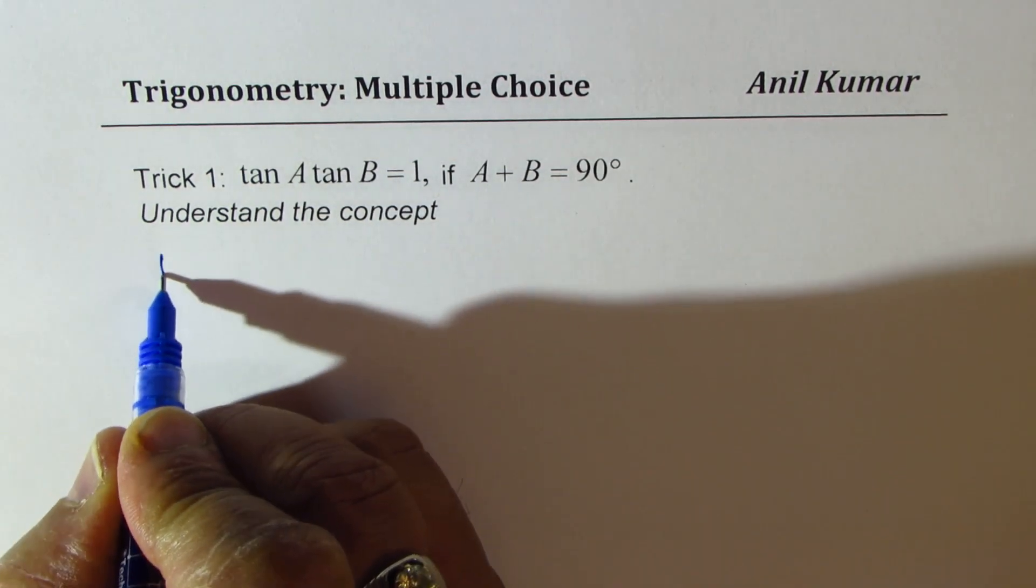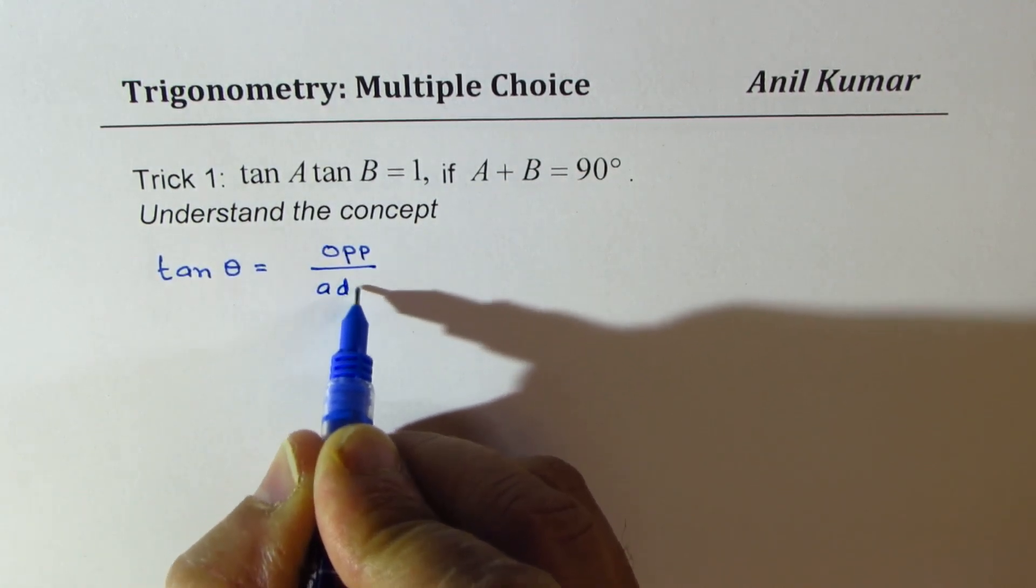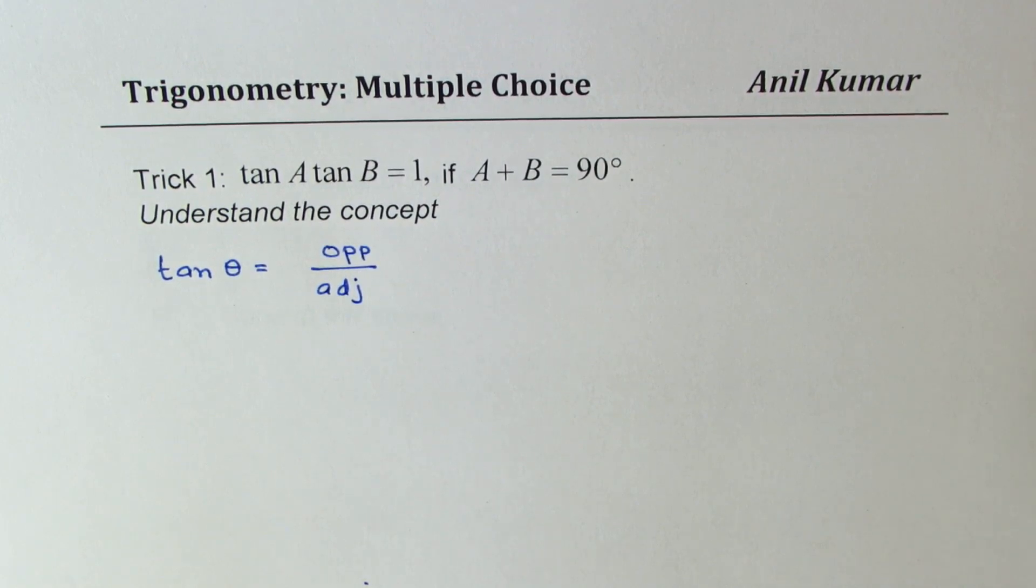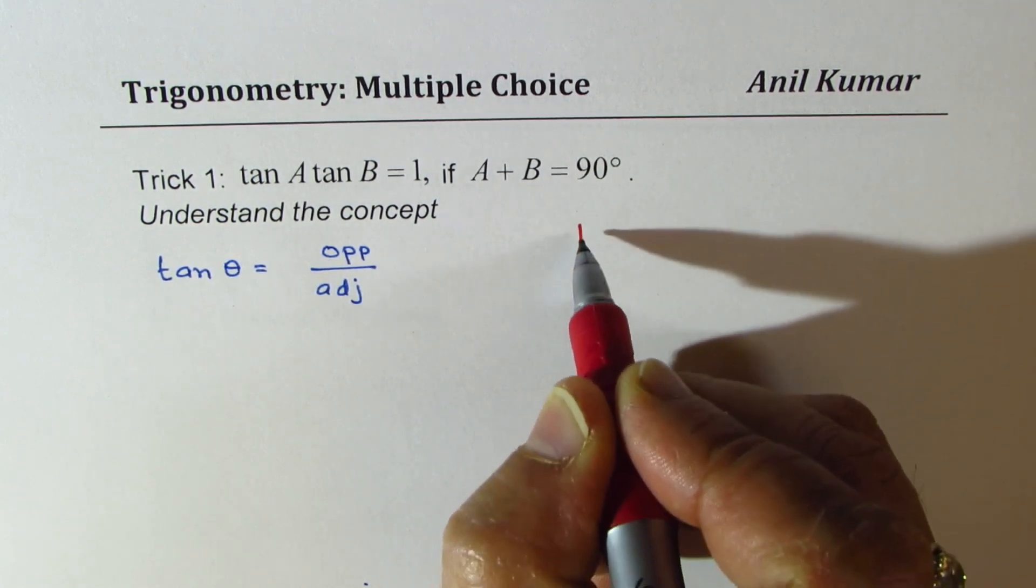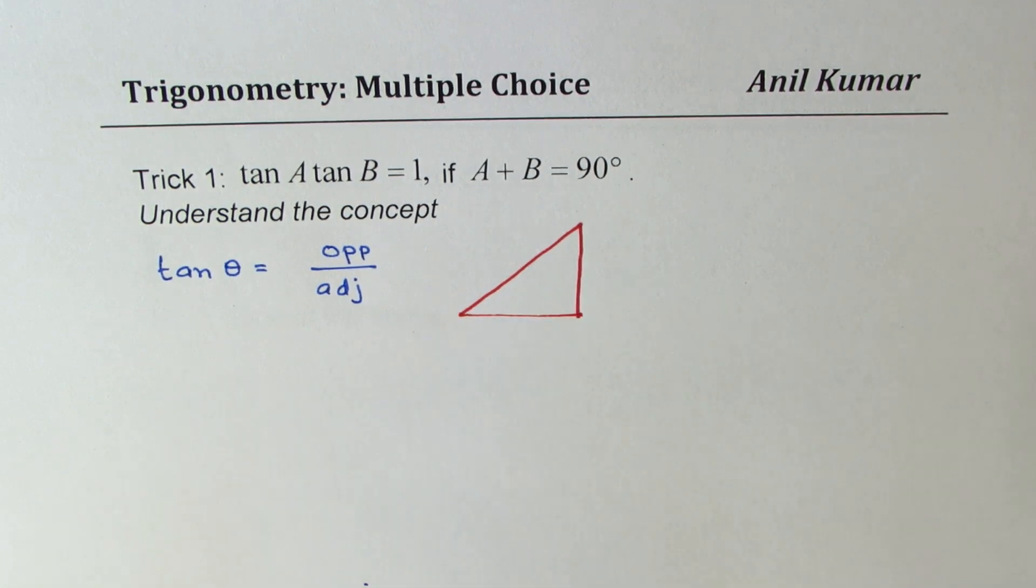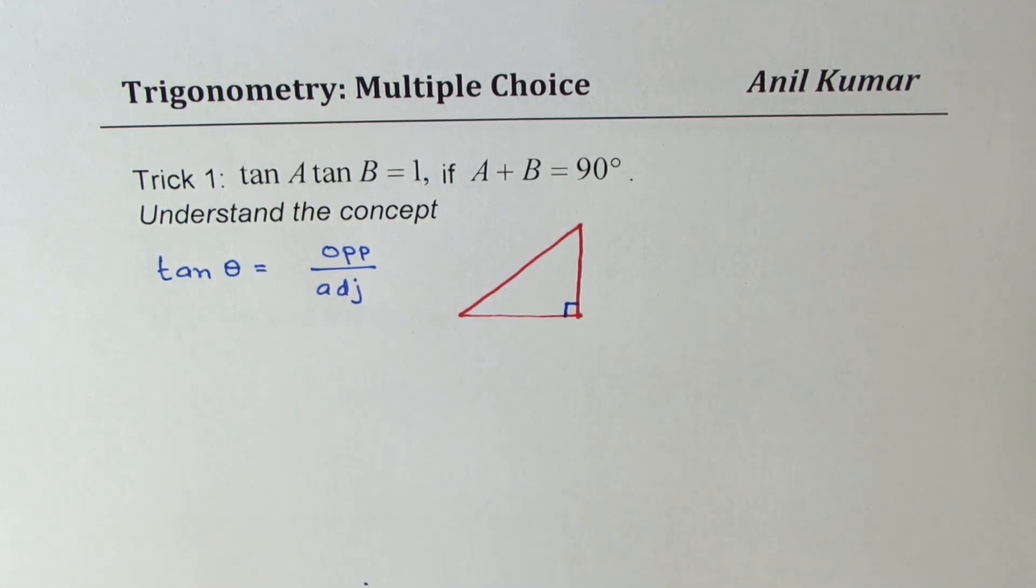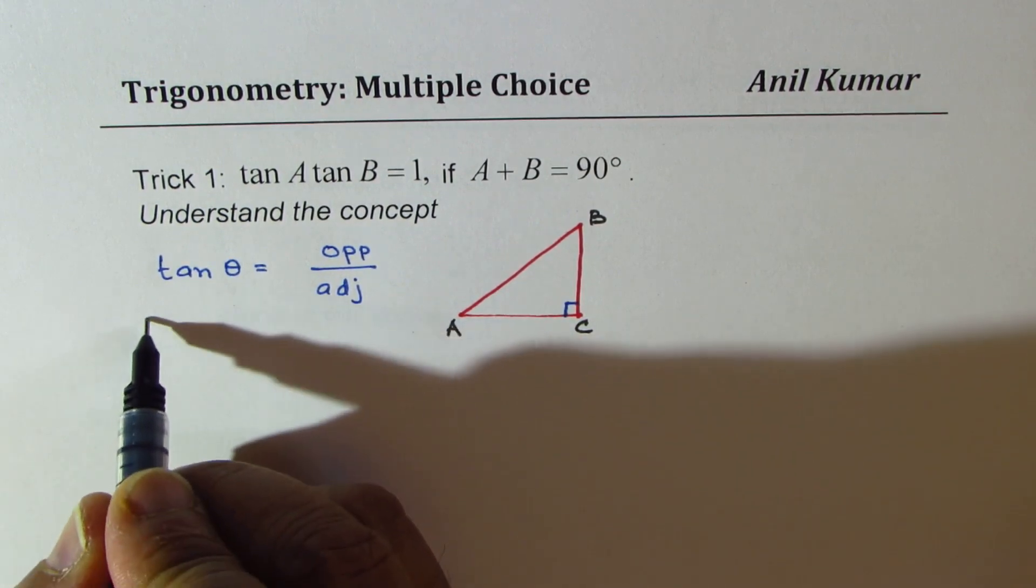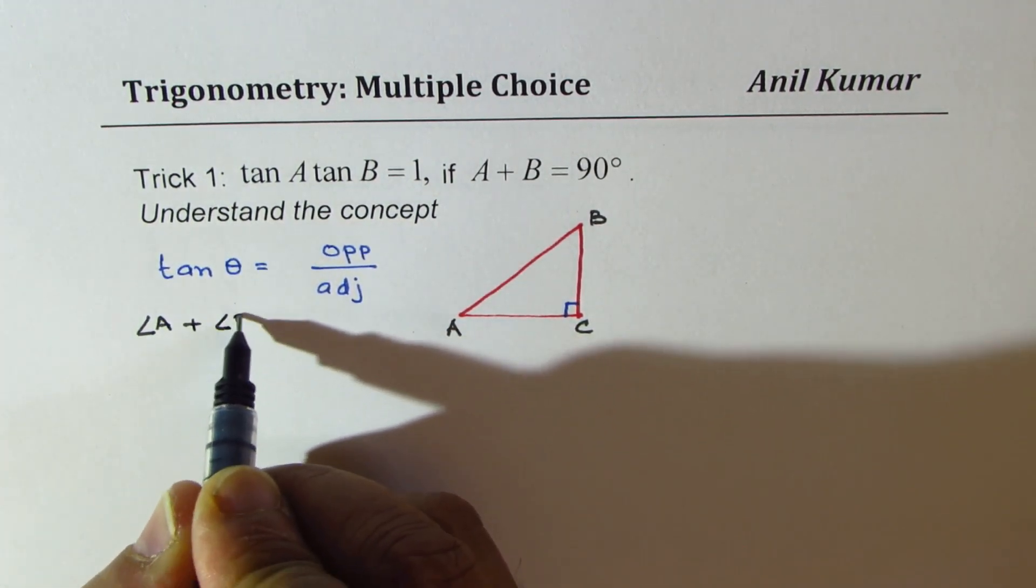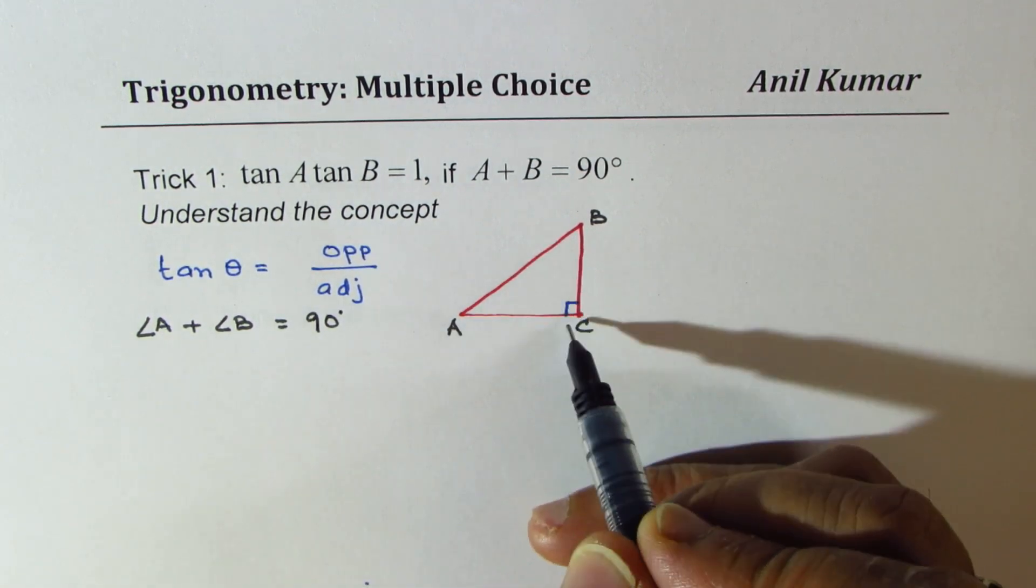Now what we know is that tan of any angle theta is basically opposite side over adjacent side. Now when we talk about 90 degrees angle, we can always take a right triangle in which one of the angles is always 90 degrees. Let the other two angles be A and B. So if I say that these angles are A and B, let's say this vertex is C. In that case, we know that angle A plus angle B is equal to 90 degrees, since sum of these three angles is 180 degrees.